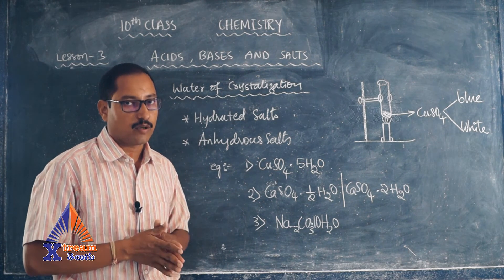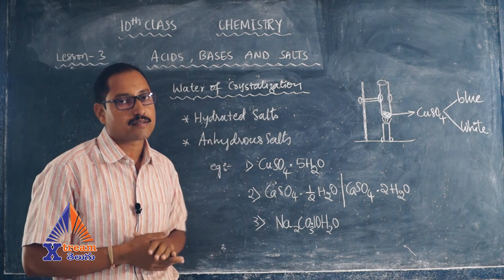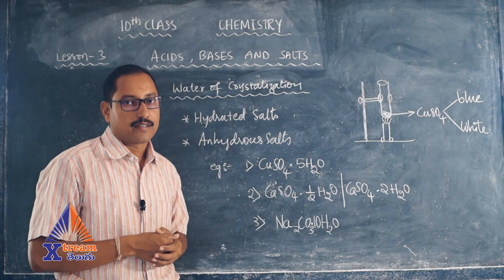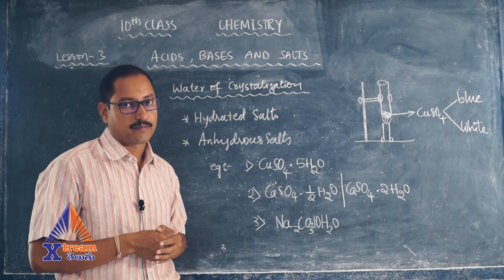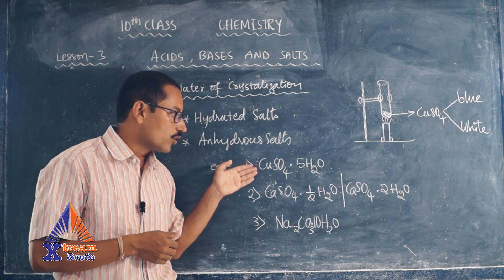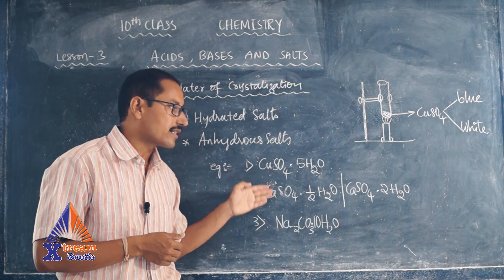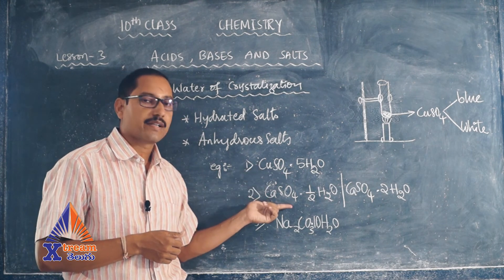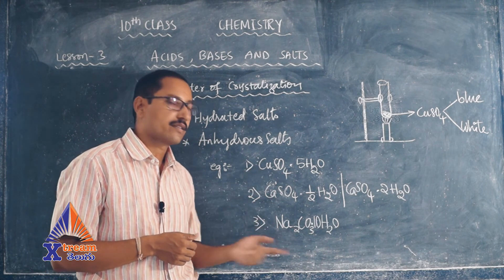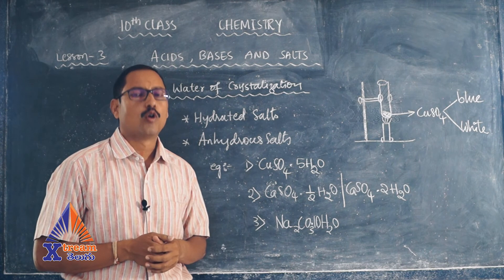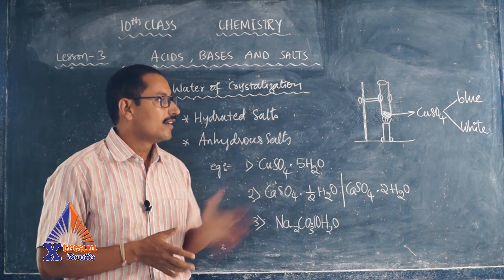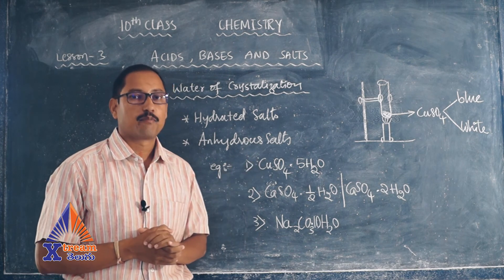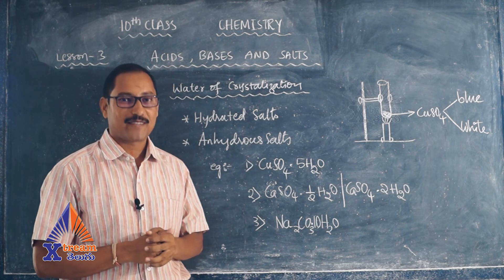So, water of crystallization is the water present in the crystals of salts. If salts have water they are called hydrated salts; if they don't have water they are called anhydrous salts. Remember the examples: copper sulfate (5 water molecules), calcium sulfate (half or 2 water molecules), and sodium carbonate (10 water molecules). If you understood and liked this class, please subscribe to our channel Xtreme Telugu.